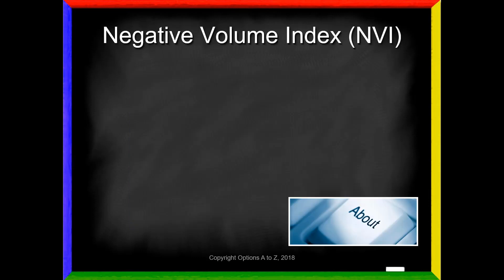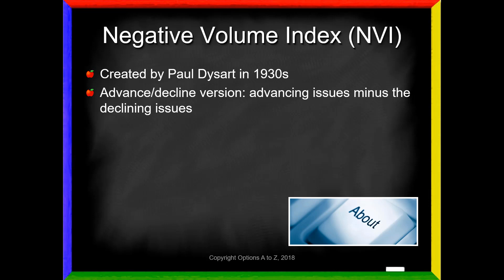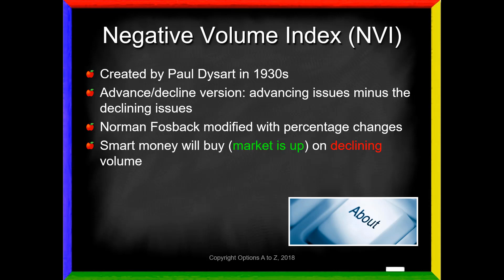The Negative Volume Index was created by Paul Dysart back in the 1930s. In his version he looked at raw numbers for changes in the stock market — what we might call the advance-decline: advancing issues minus declining issues. This was later modified by Norman Fossback, who said we should use percentage change in the market instead. Regardless of which version you use, the idea is the same: smart money buys when volumes are down.